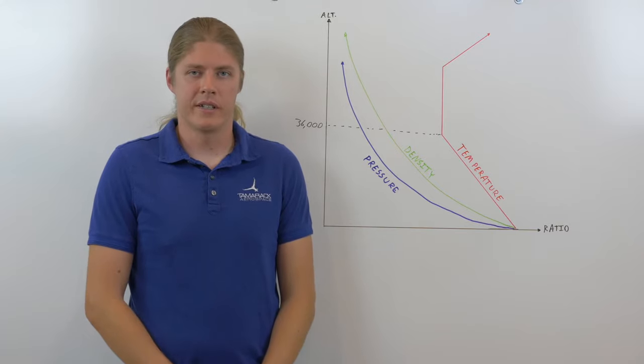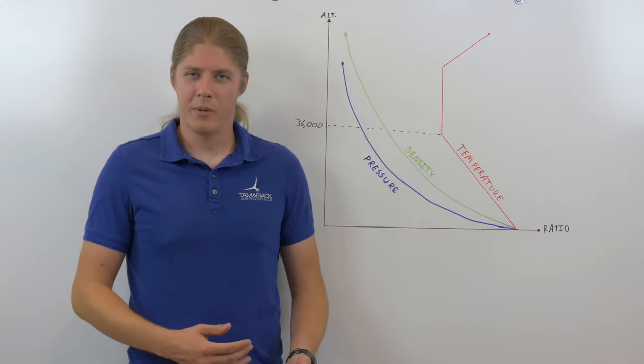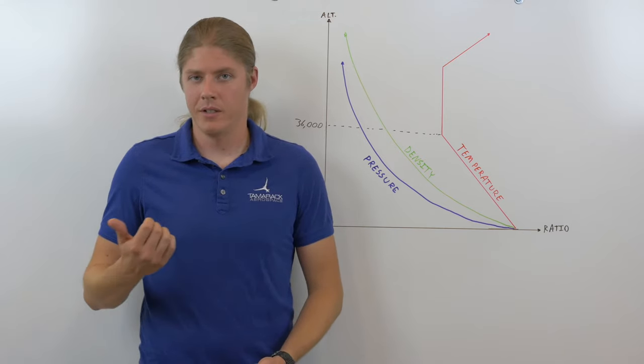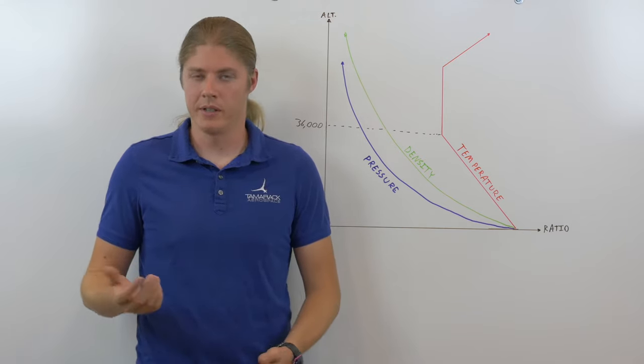ISA is an abbreviation for International Standard Atmosphere, an agreed-upon model that we use to reliably describe how the atmosphere varies in terms of temperature, pressure, and density with altitude.